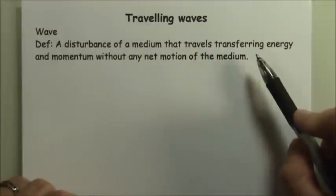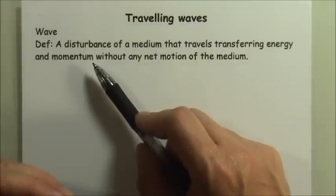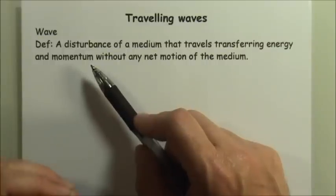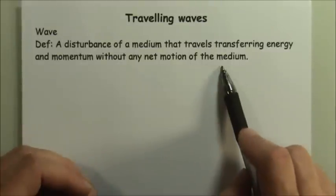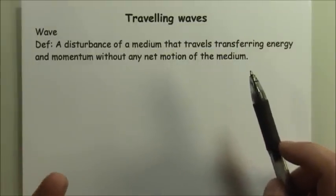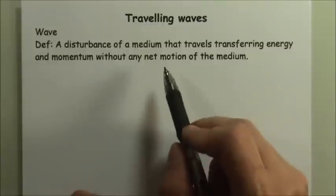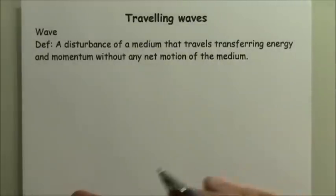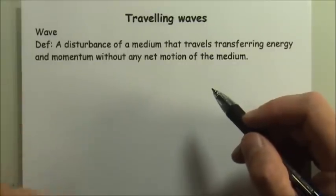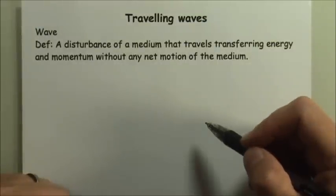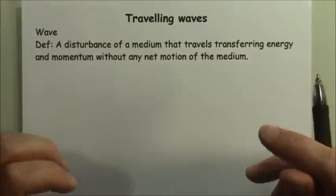As a result, the wave does two things: it transfers energy and momentum. Energy has to be put in to create the disturbance, and the medium then transfers that energy and momentum from one end to the other without the net motion of the medium. There are three parts to the definition of a wave: the medium is disturbed, the wave transfers energy and momentum, and there is no net motion of the medium — after the wave passes, the medium is right back exactly where it was.